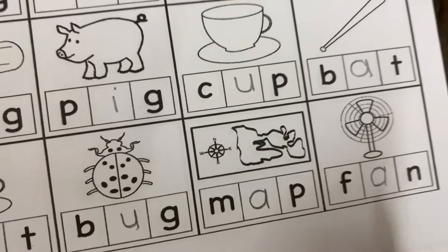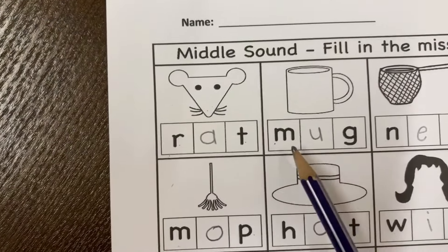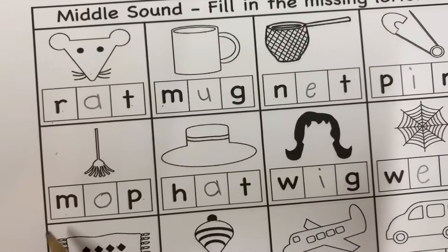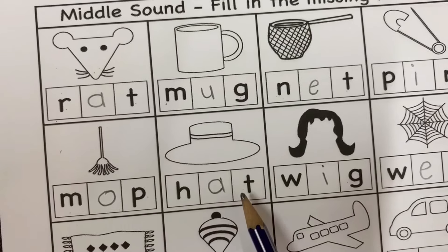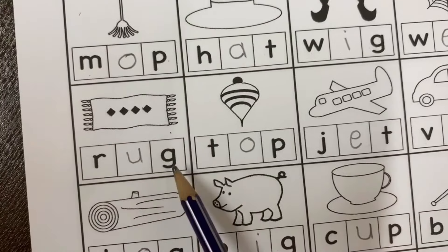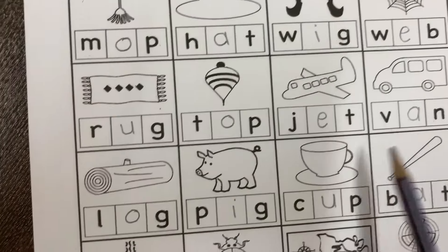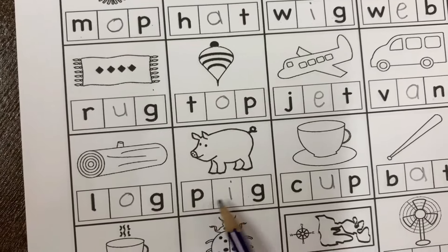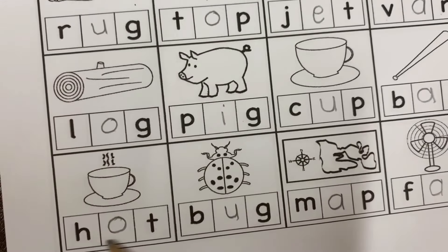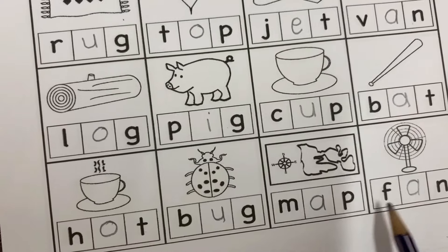Let's now read all the words together. Rat. Mug. Net. Pin. Mop. Hat. Wick. Web. Rug. Top. Jet. Van. Log. Pig. Cop. Bat. Hut. Bug. Map. Fan.